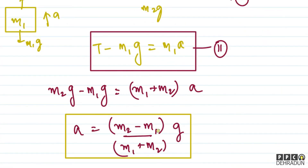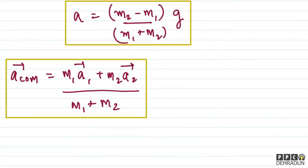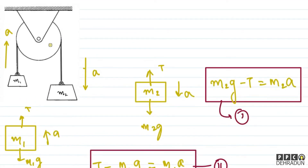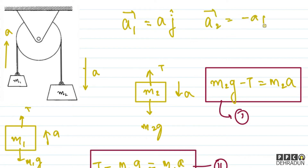Now, depending on whether M2 is greater or M1 is greater — if M2 is larger, a will be positive, meaning the direction we chose is correct. But if M2 is less than M1, then a will be negative, meaning acceleration is in the opposite direction. Now we have the magnitude of a. According to the diagram, a1 vector equals a·j-cap (taking upward as y-axis), and a2 vector equals minus a·j-cap.